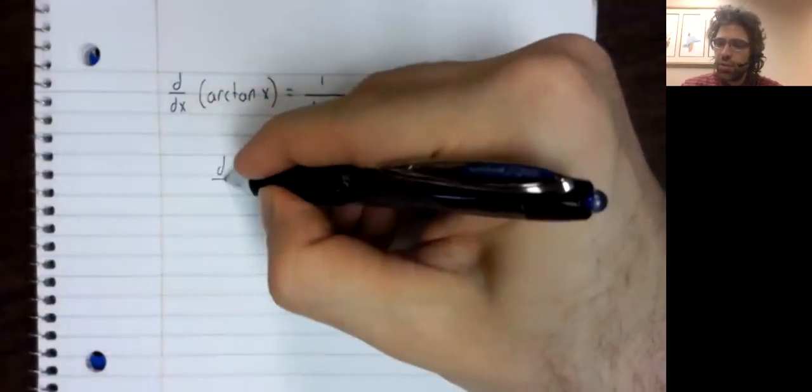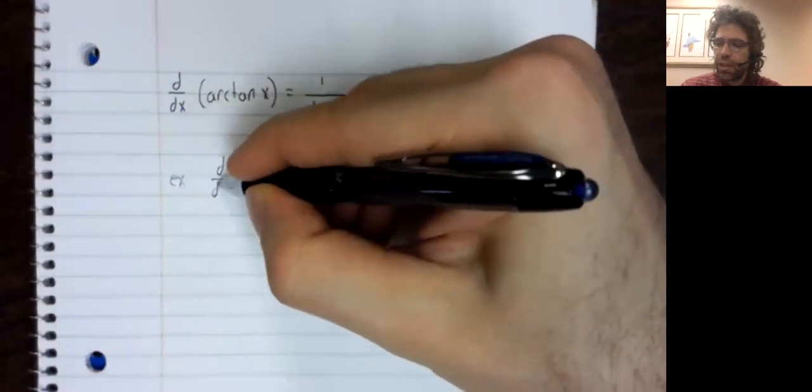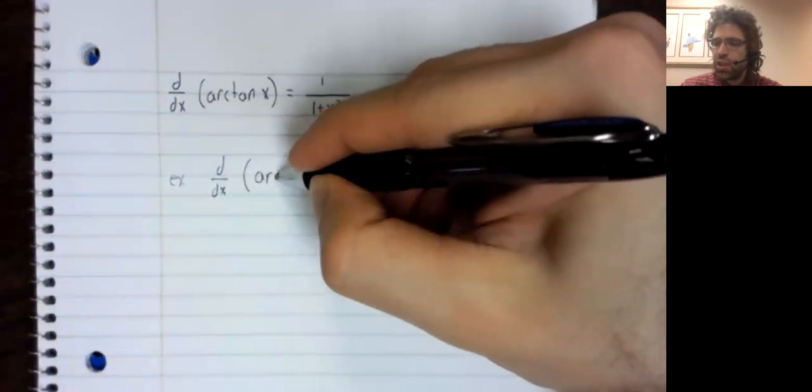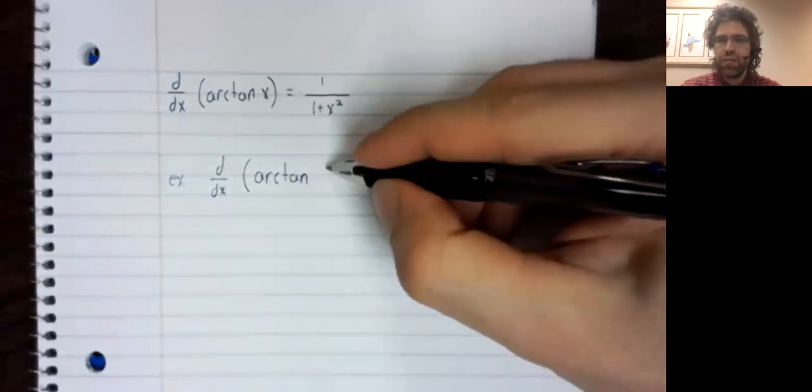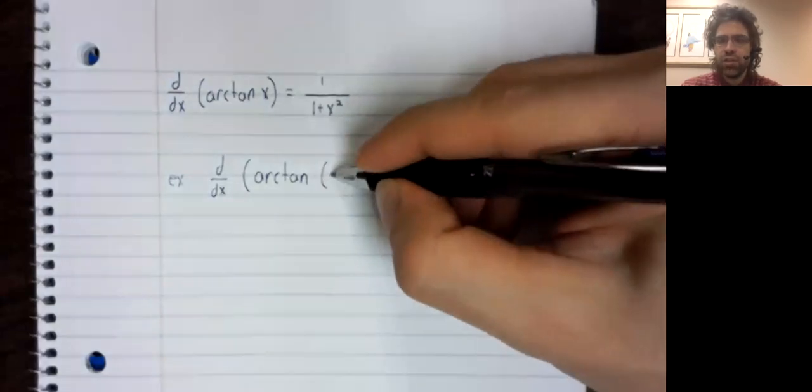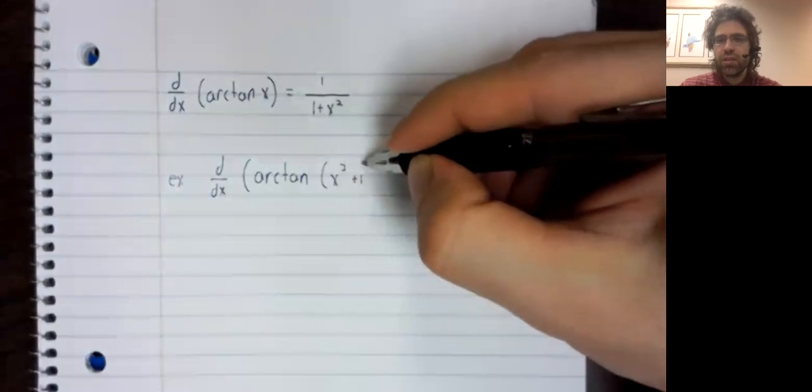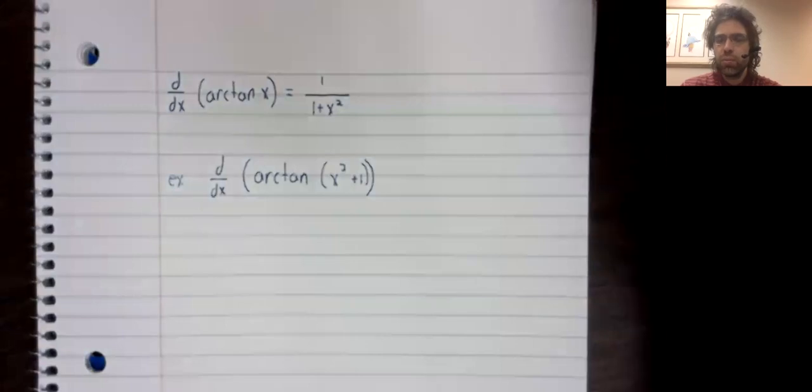Still, we can do a quick example, maybe using the chain rule, the derivative of the arctangent of x squared plus one.